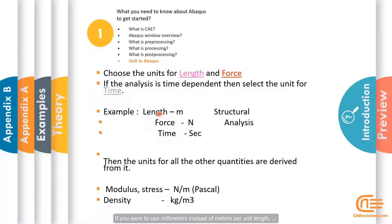If you were to use millimeters instead of meters per unit length, then the stress unit would be megapascals and the density unit would be ton millimeters cubic.